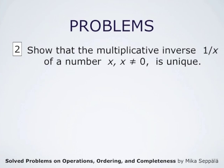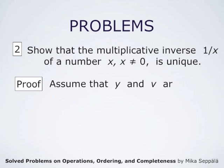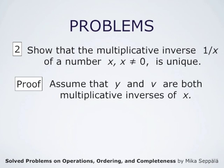In this problem, we have to show that the multiplicative inverse, 1 over x, of the number x is unique. Of course, we must assume that x is different from zero in order for it to have a multiplicative inverse. The proof goes as follows: assume that y and v are both multiplicative inverses of x. We have to show that necessarily y equals v.